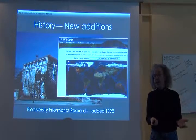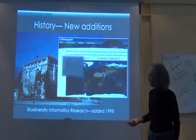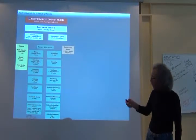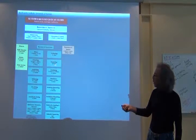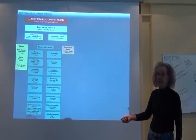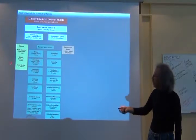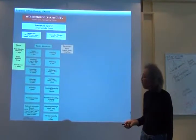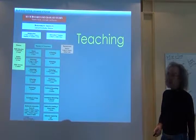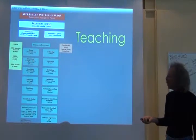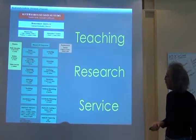Here's an org chart: we have botany and entomology, archaeology, ornithology, and so on. Biodiversity informatics research is completely funded by research grants. We have a public museum and a paleontological institute as well. Our mission is teaching, research, and service — as in every academic institution.